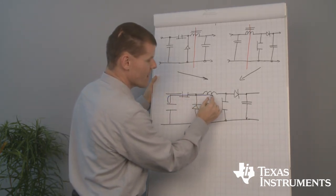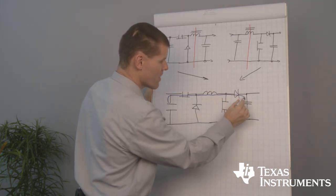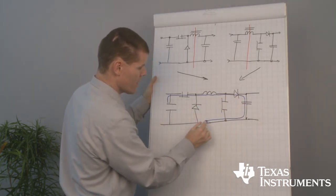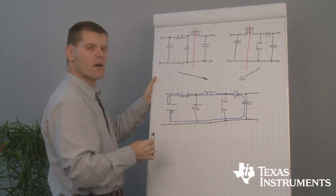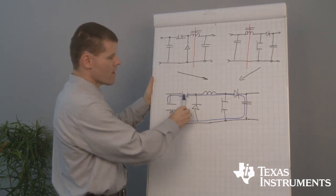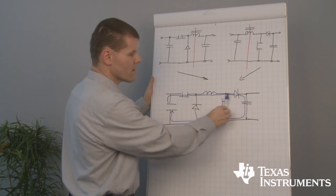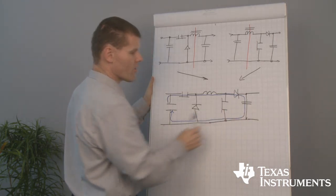The high side FET is closed. Current passes through the FET, through the inductor, through the rectifier to the output.